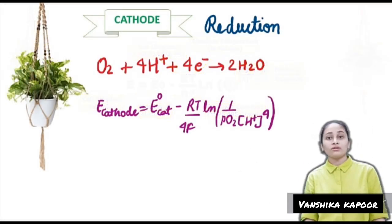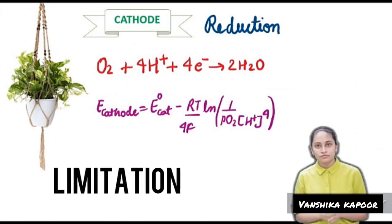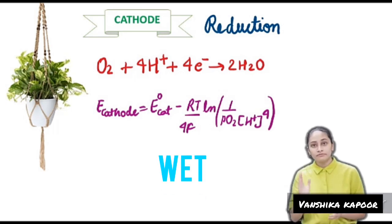At cathode, oxygen and protons are reduced to water. Here comes the limitations in oxygen diffusion to electrodes. The electrode needs to be wet in order to transport protons, and the maximum oxygen concentration in water is also low.